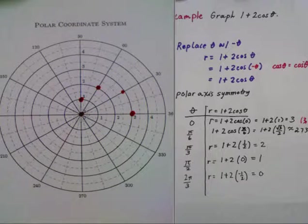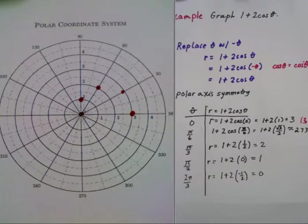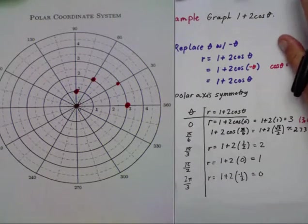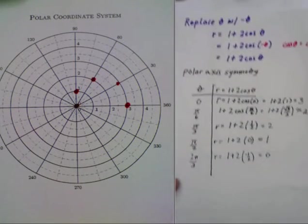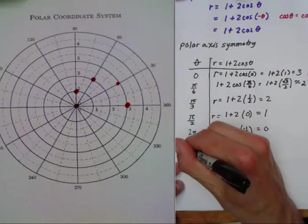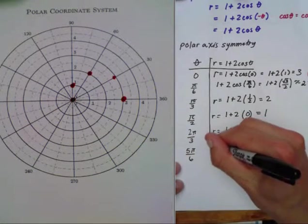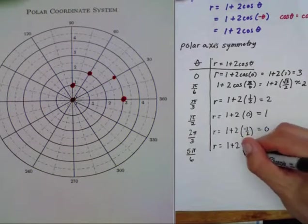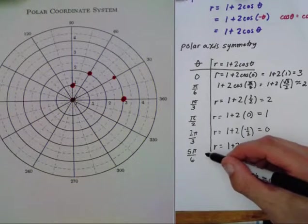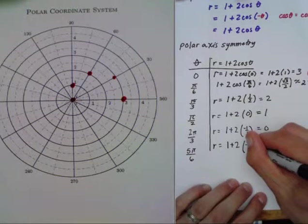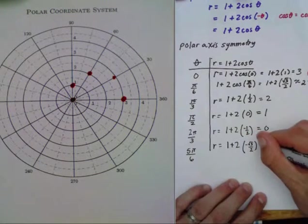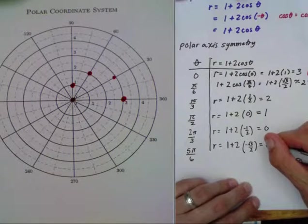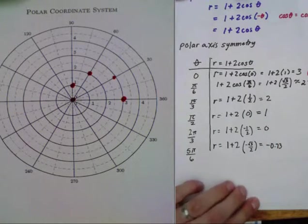Now let's look at one more point. We'll actually do the last two here. We have five pi over six. So r equals one plus two times cosine of five pi over six. Cosine of five pi over six is negative root three over two, and we get one minus root three, which is approximately negative 0.73.